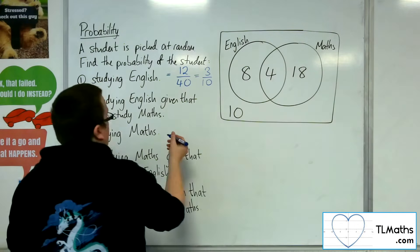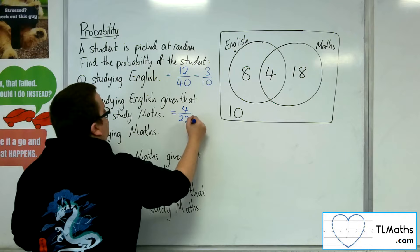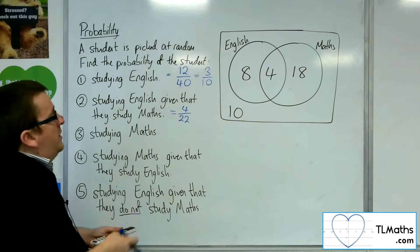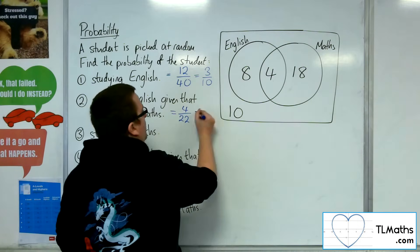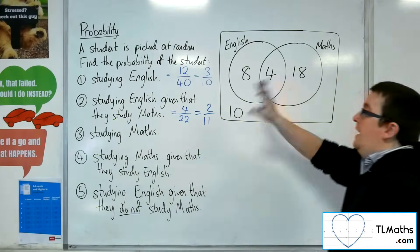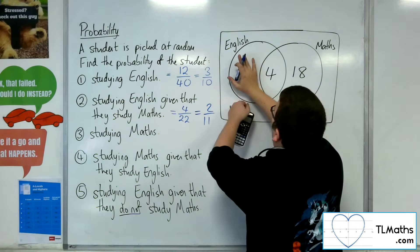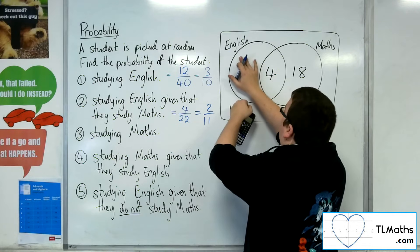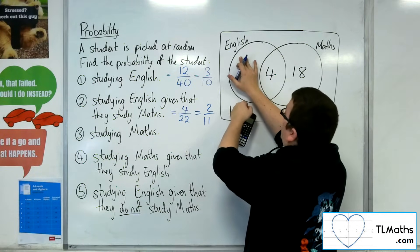What this does is it reduces what you are looking at on the Venn diagram. What you want to consider is: if it says given that they study maths, you can cover up anything that isn't maths. And then you're being asked what's the probability of choosing English? Well, it's 4 out of 22.